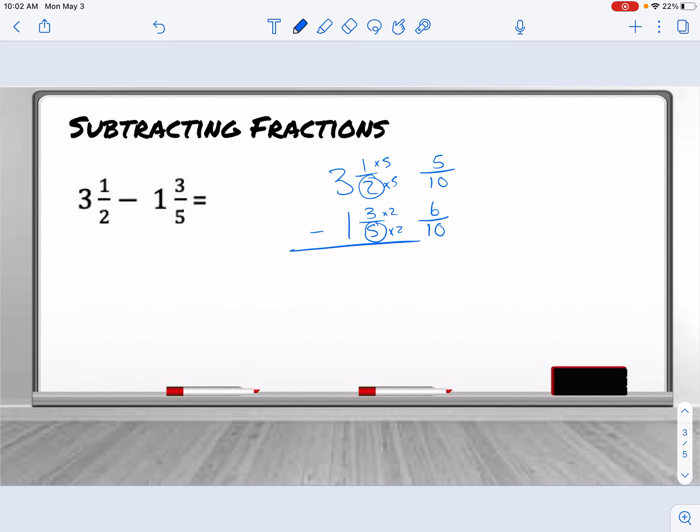Now since I'm subtracting, I'm trying to do 5 take away 6. That's going to give us a negative. So we're going to have to go and borrow. We borrow from the whole number 3, which now becomes a 2. And then I need to add the denominator to the numerator. So 10 plus 5 makes it now 15.